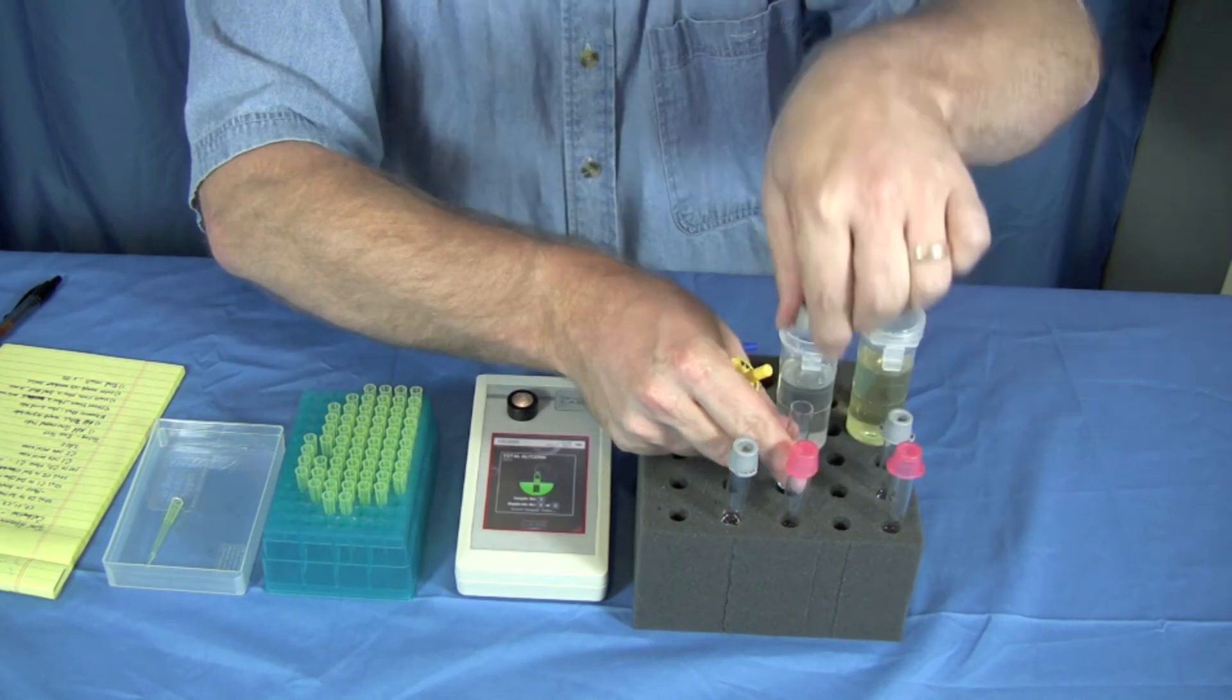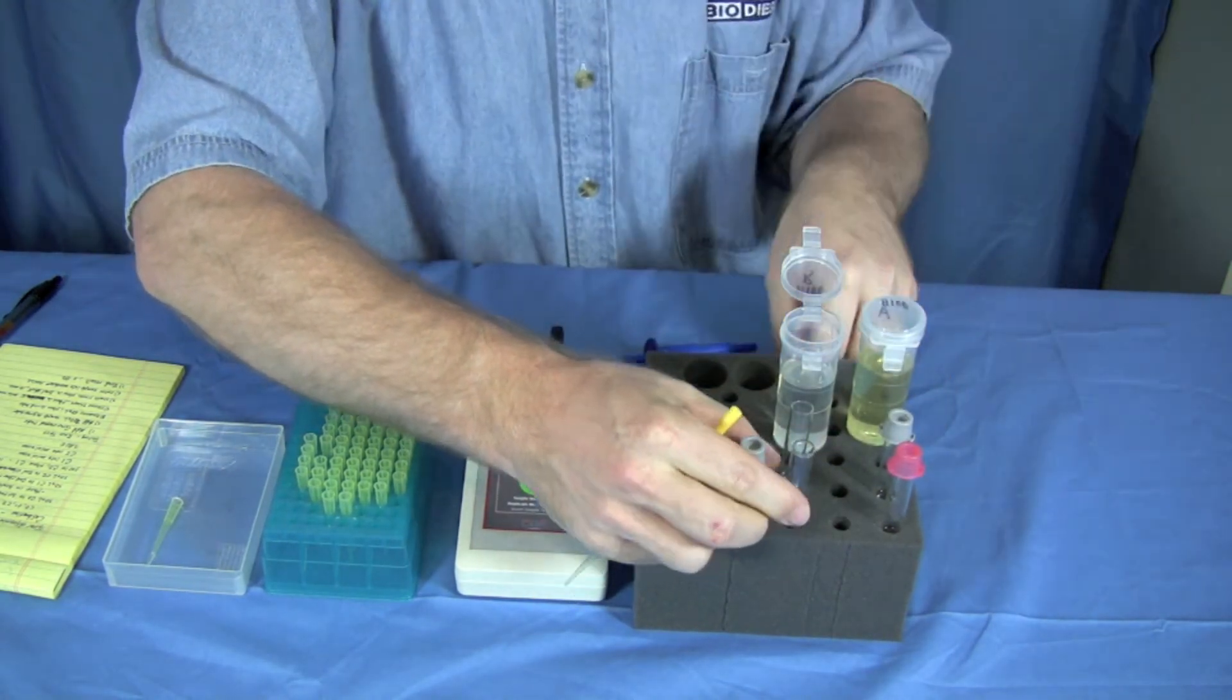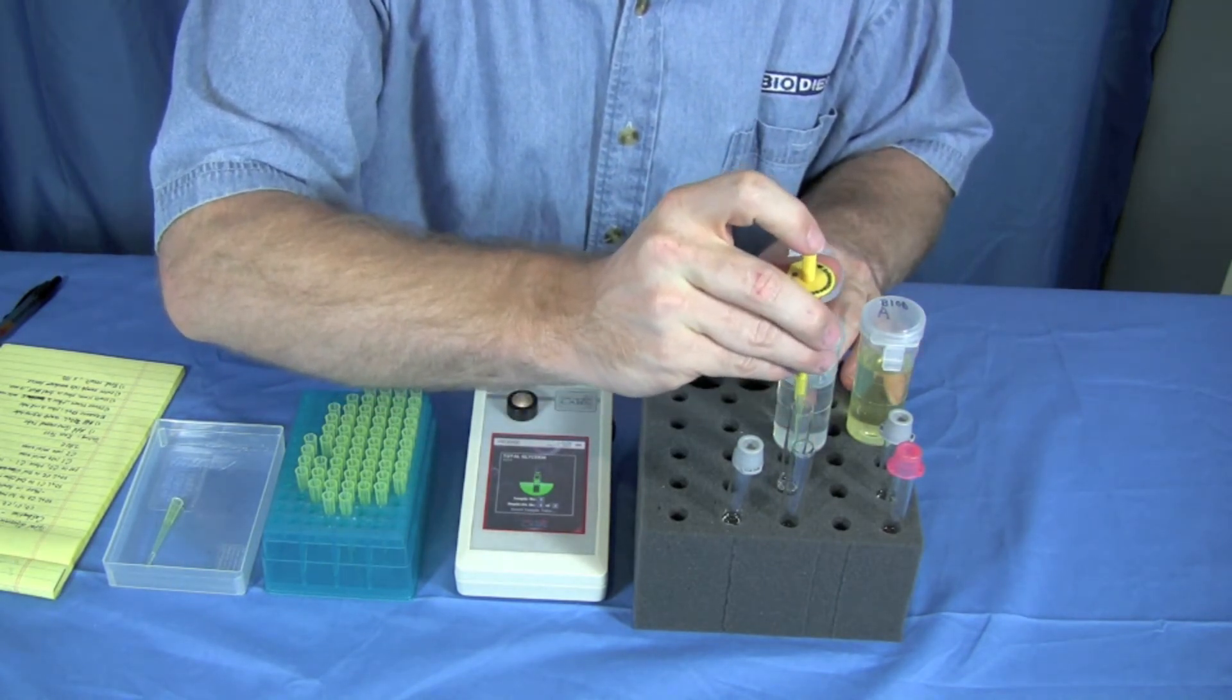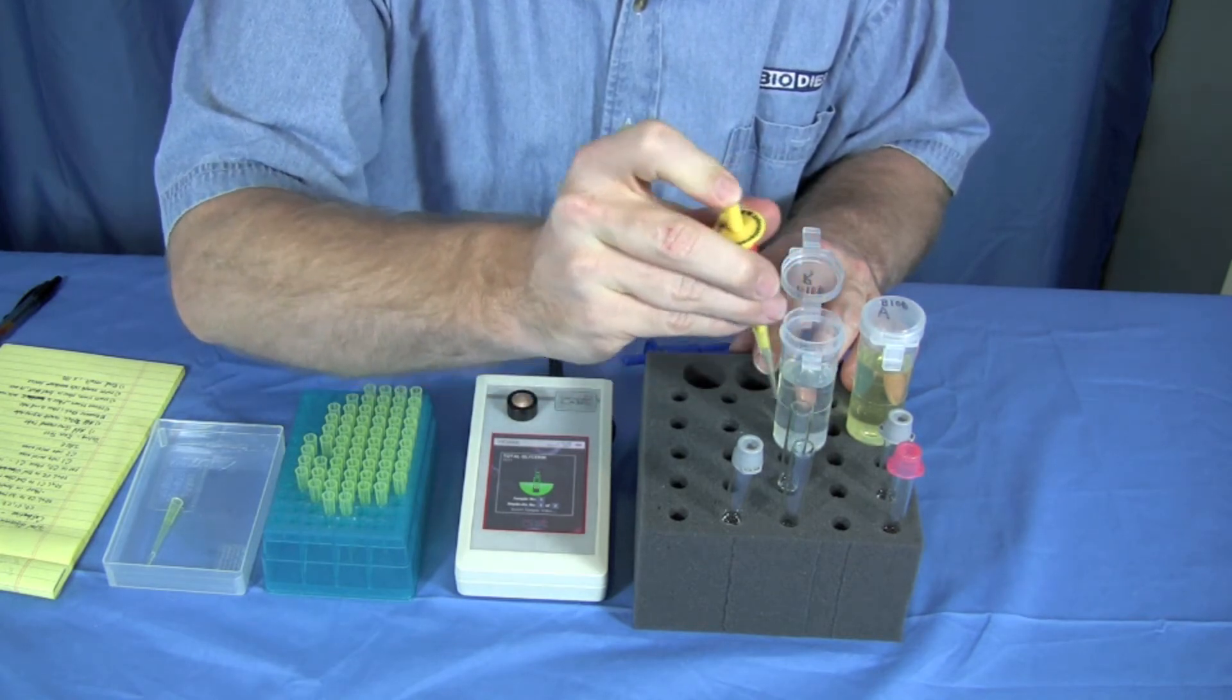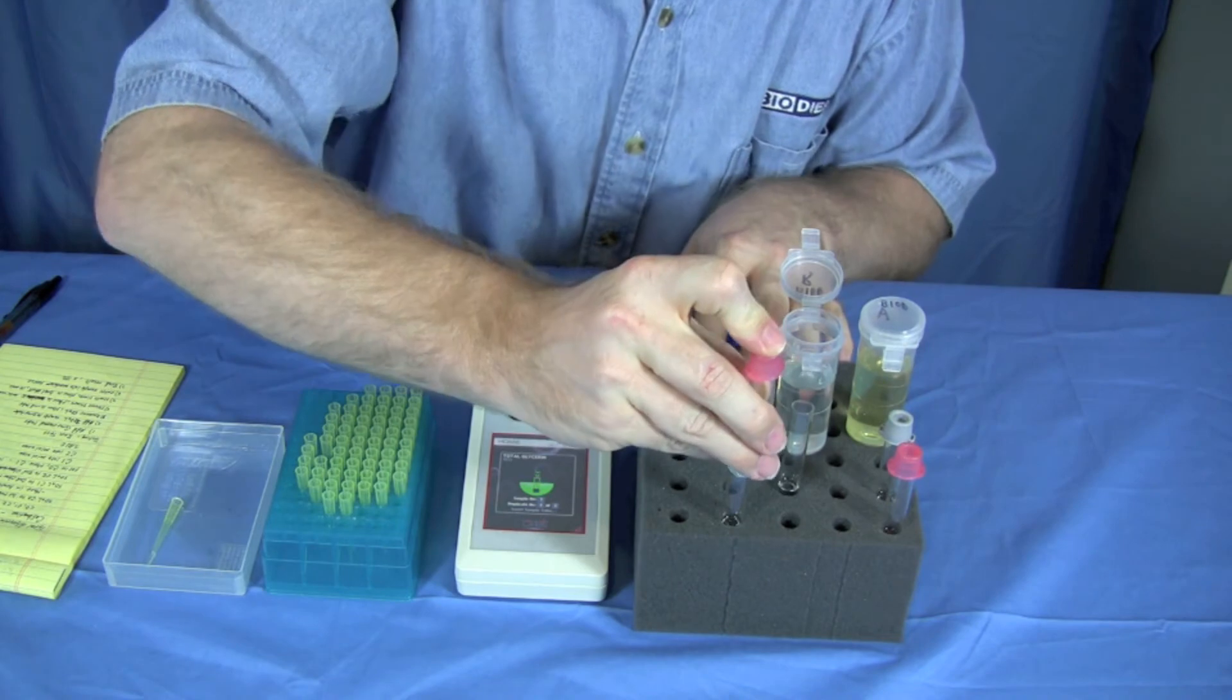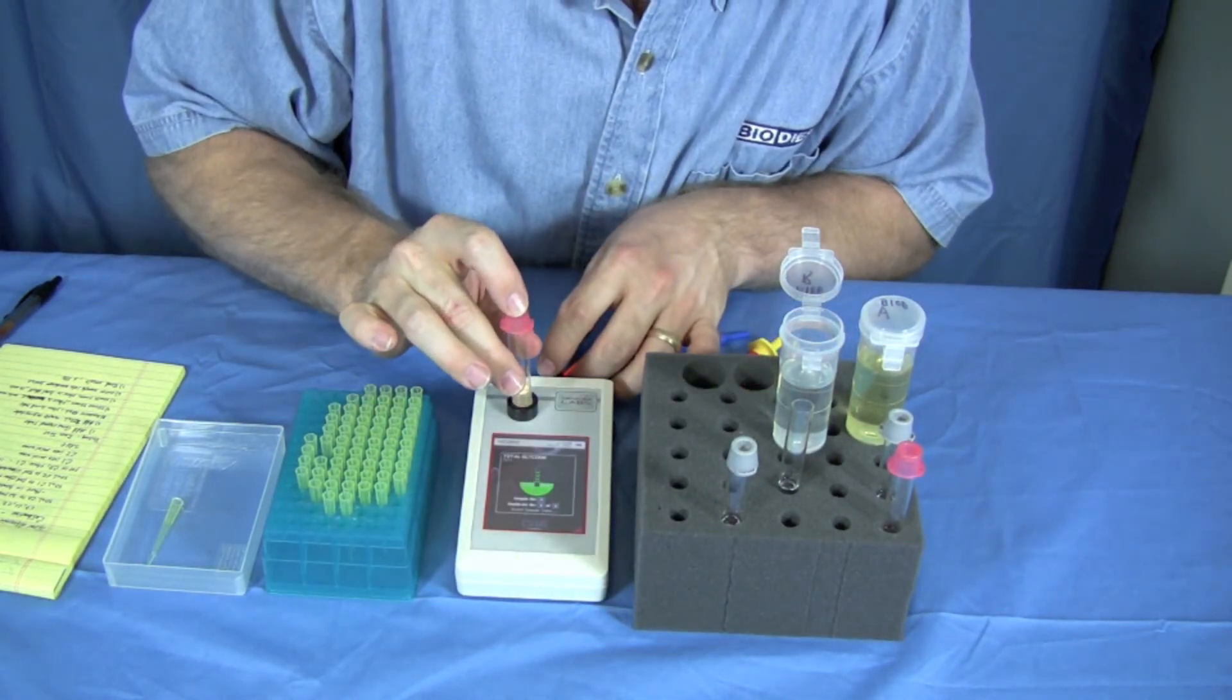We pull 50 microliters out of the dilution tube. Put it into our testing vial. We cap that. Invert it one, two, and three. And we put it into the mini scan.